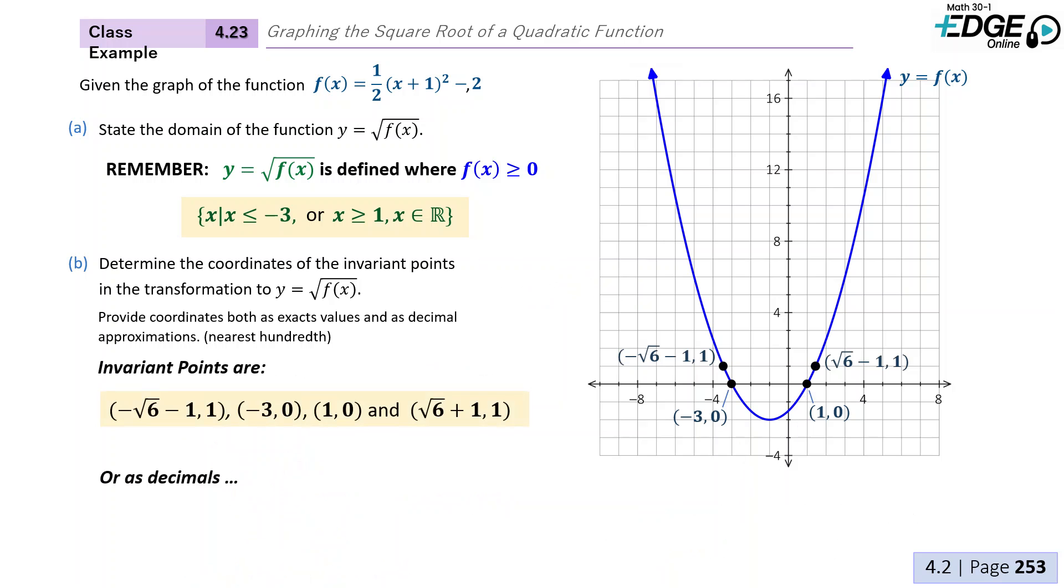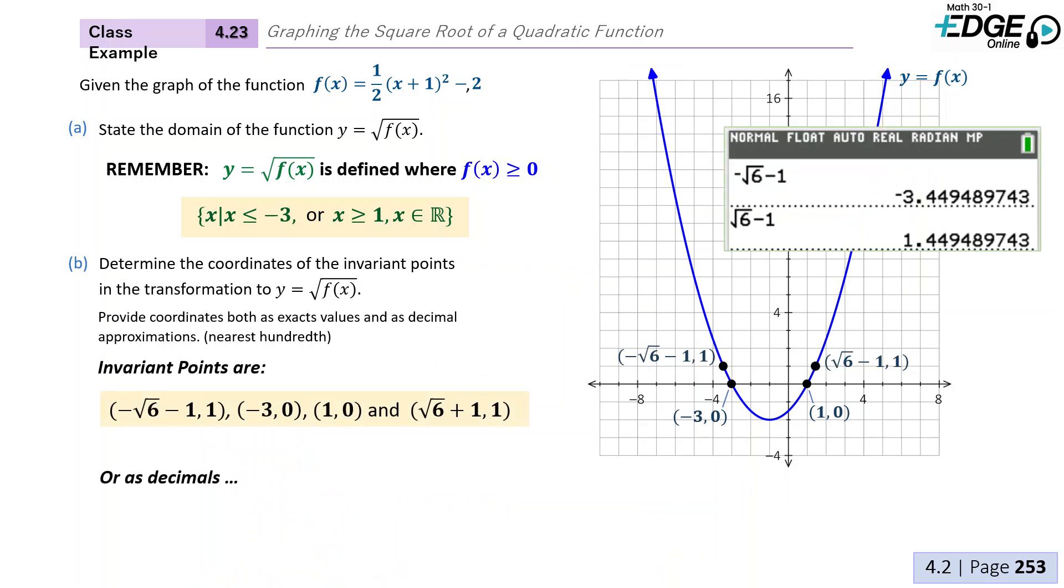So the invariant points would look as follows. Or as decimals, we would approximate these square root solutions. So the problem with decimal values is that we would have to round at some point. It's going to be a less accurate solution than the square root.